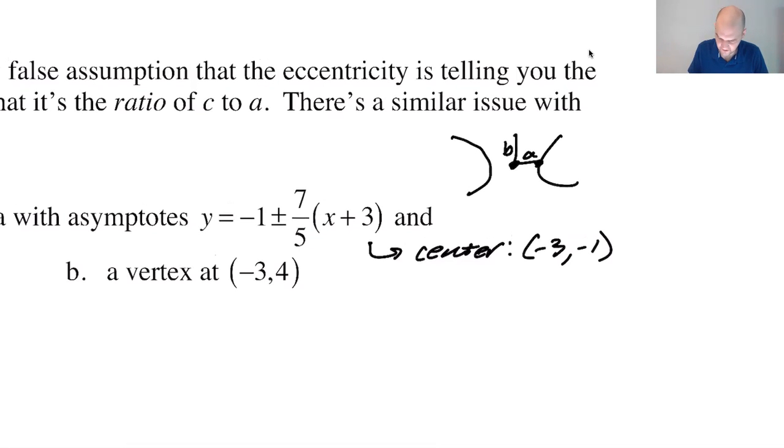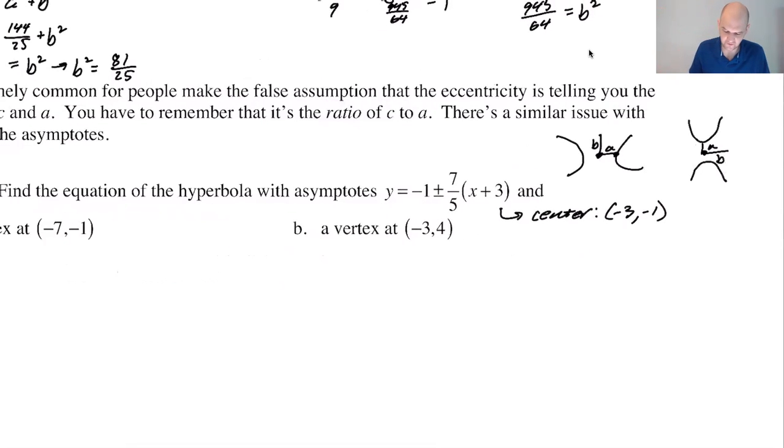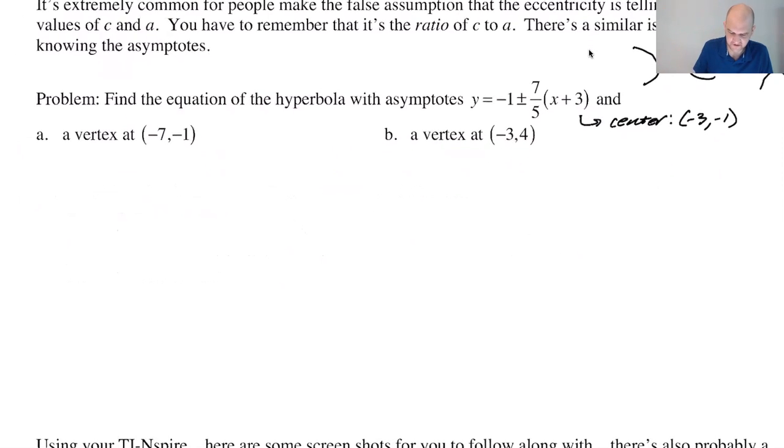If it goes the other way, then this is going to be a, and then this will be b. So if it's eating the y-axis, then you go up a over b, so then it'd be a over b. So we need to know more information, but we do know the center.